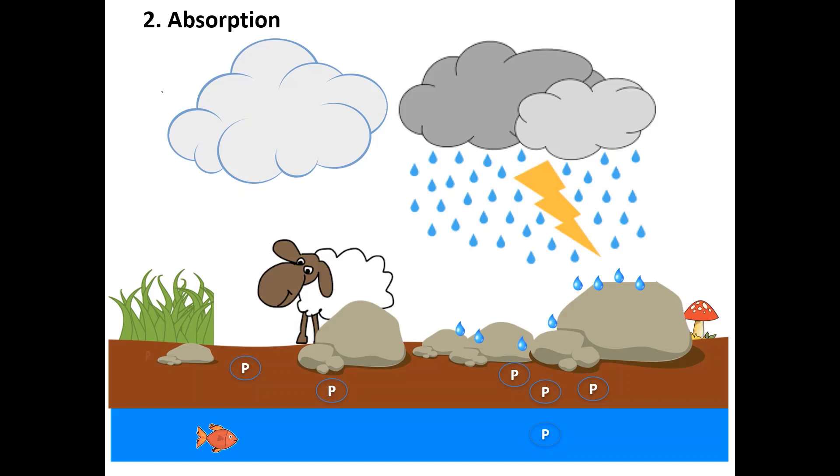The plants as producers are able to absorb phosphorus through their roots and then grow. Then, animals obtain phosphorus from drinking water and eating plants.